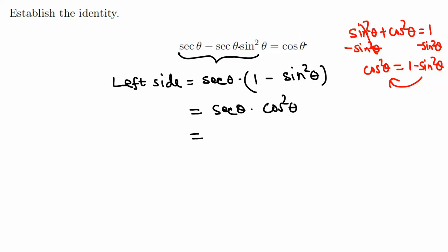Secant is one over cosine times cosine squared theta. That's cosine times cosine theta. By the way, cosine theta squared you can write this way, or pretty much this is cosine times cosine.